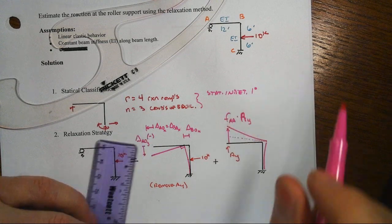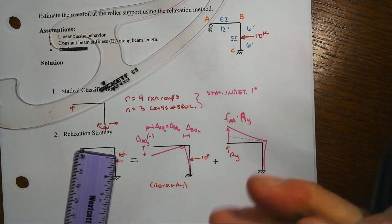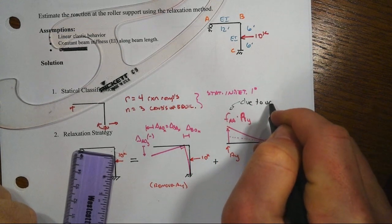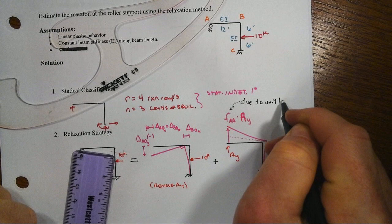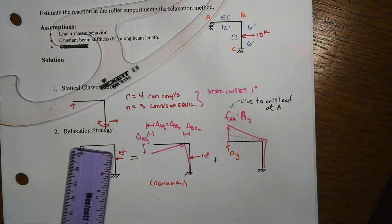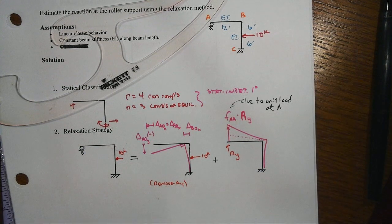Right, so remember that's the flexibility coefficient here that'd be due to a unit load, and then we scale it up by the unknown amount of Ay. We're going to add those two together so that we end up with ultimately compatibility.